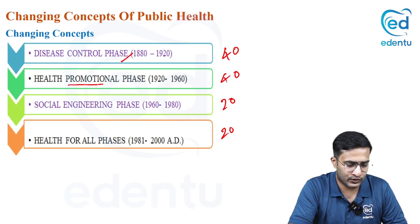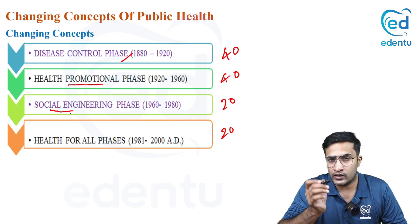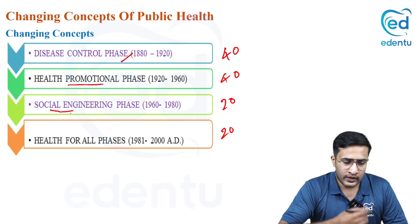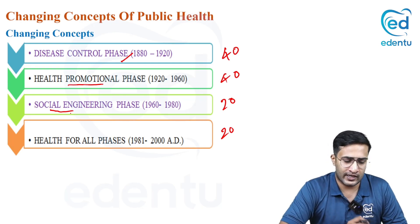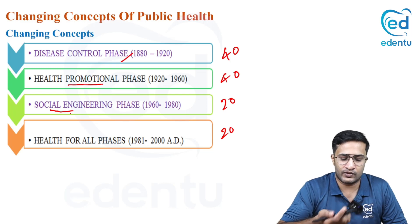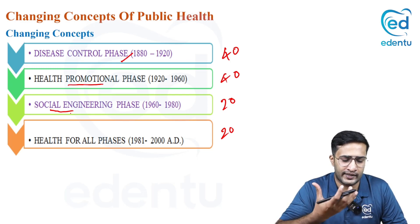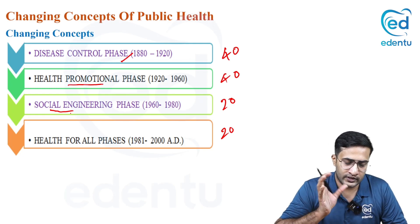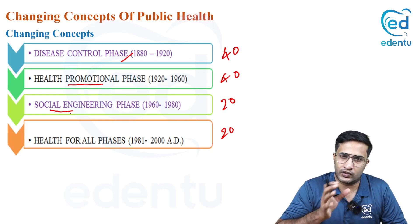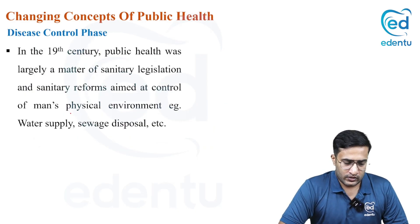Then came the social engineering phase from 1960 to 1980, and then the health for all phase, which is still ongoing — even though the target was set for 2000, these are all idealistic concepts or notions describing how diseases were controlled over time.